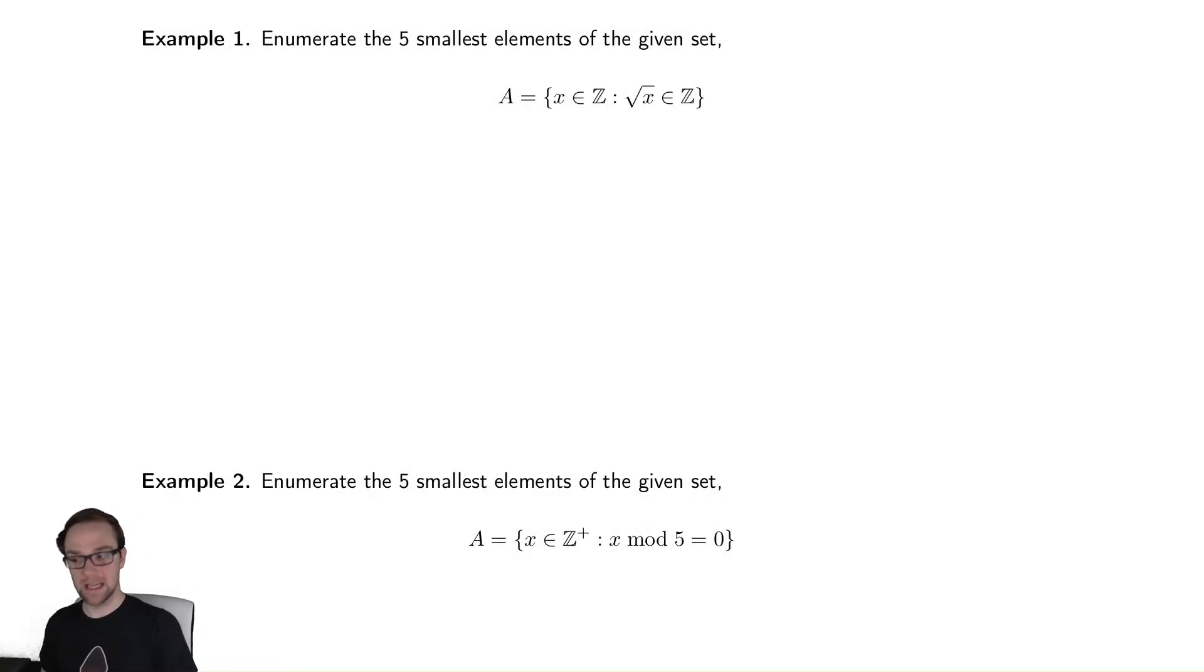All right, let's do a couple of examples of writing out the elements of a set using those sets we talked about before. Our first one says: the set of all integers such that the square root of that integer is also an integer.